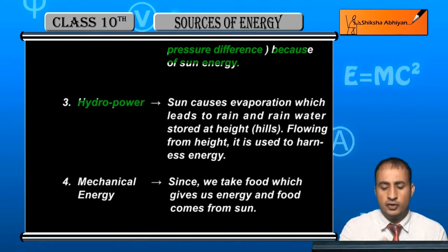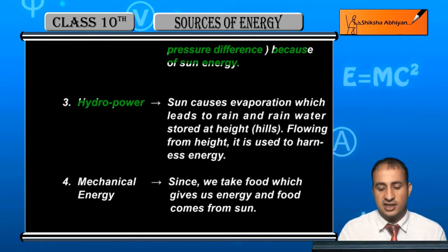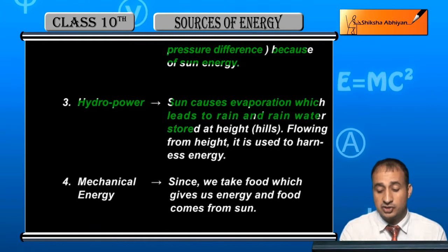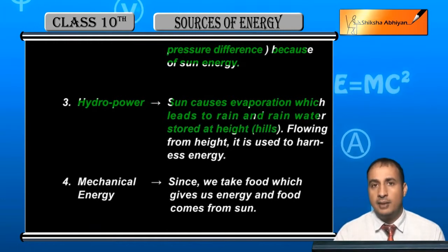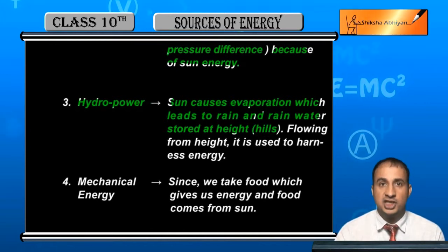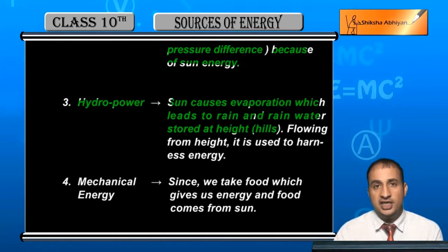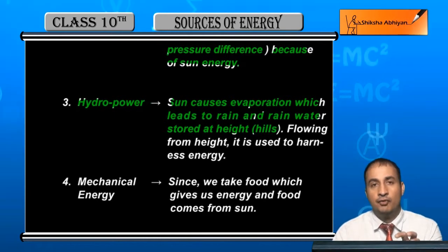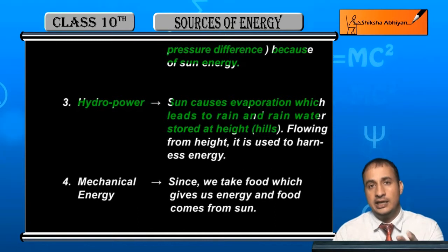Hydropower — the sun leads to evaporation, which leads to rain. Rain water gets stored at height in hilly areas. When the water flows down from height, it is used to harness hydropower energy.